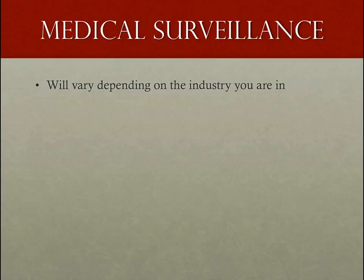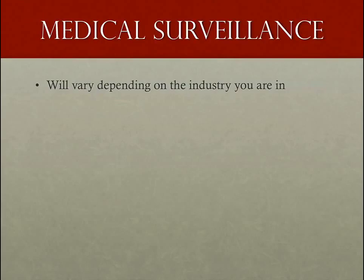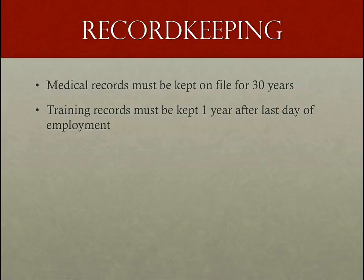Medical surveillance requirements are different depending on the industry. Medical surveillance must be provided for workers who engage in certain classifications of work or experience exposures at or above the PEL in construction and shipyards. In general industry, medical examinations must be provided for workers who experience exposure at or above the PEL. Records must be kept on exposure monitoring for asbestos for at least 30 years, and worker medical surveillance records retained for the duration of employment plus 30 years. Training records must be kept for at least one year beyond the last date of employment.